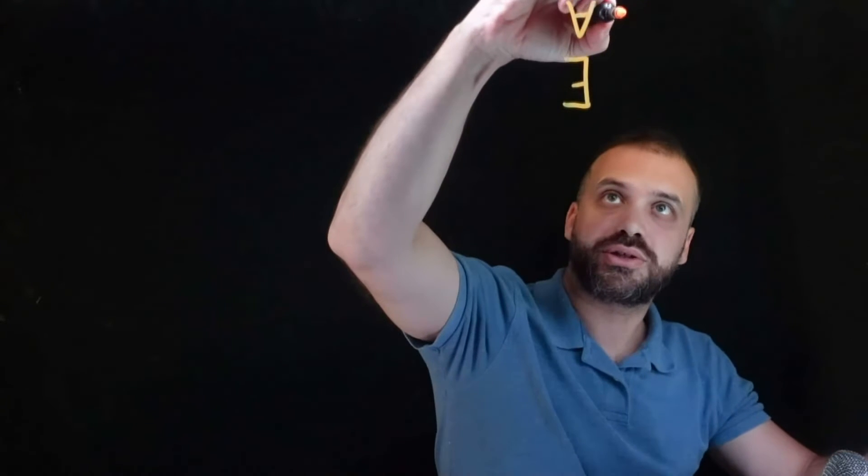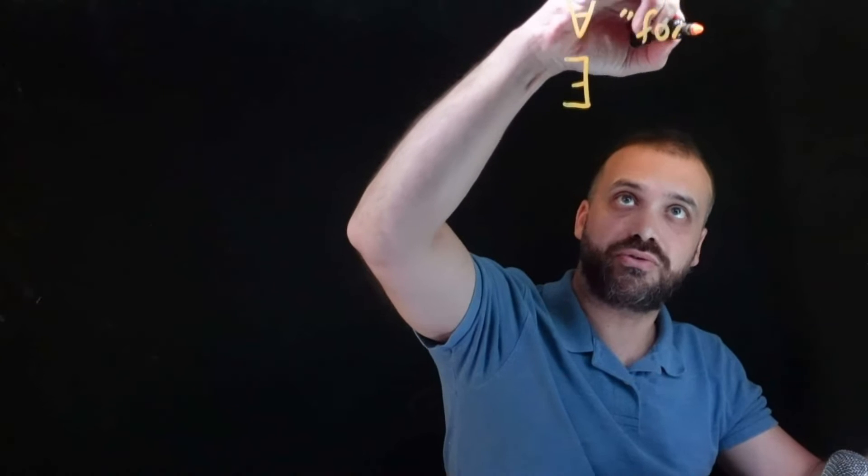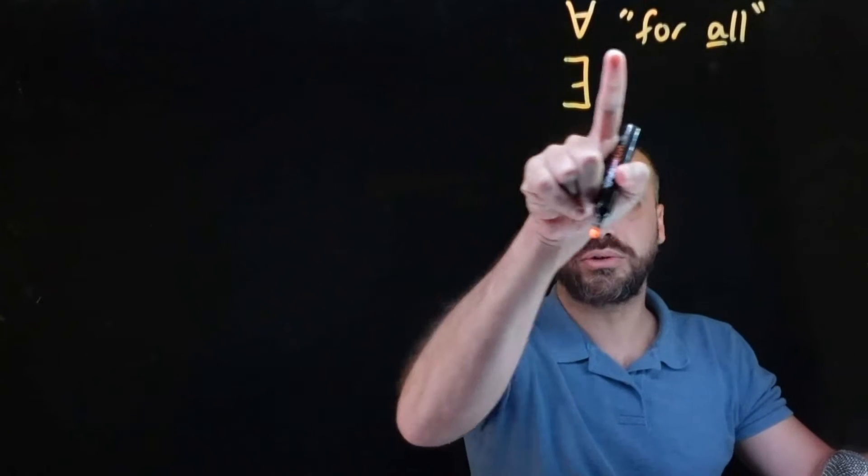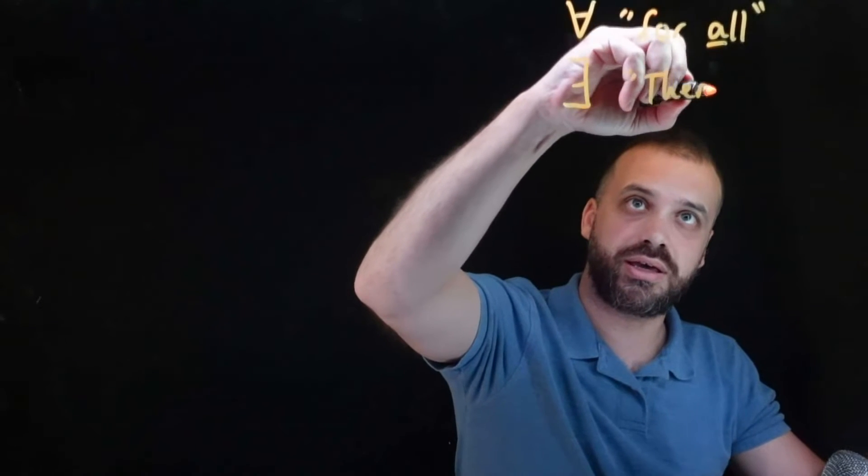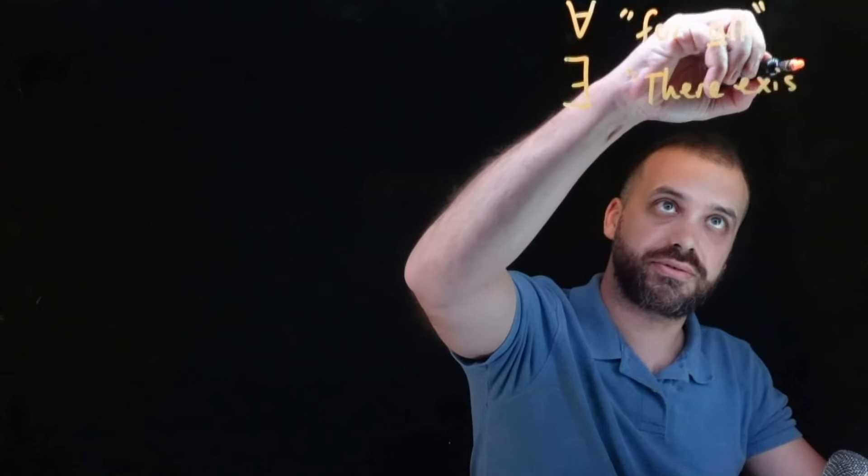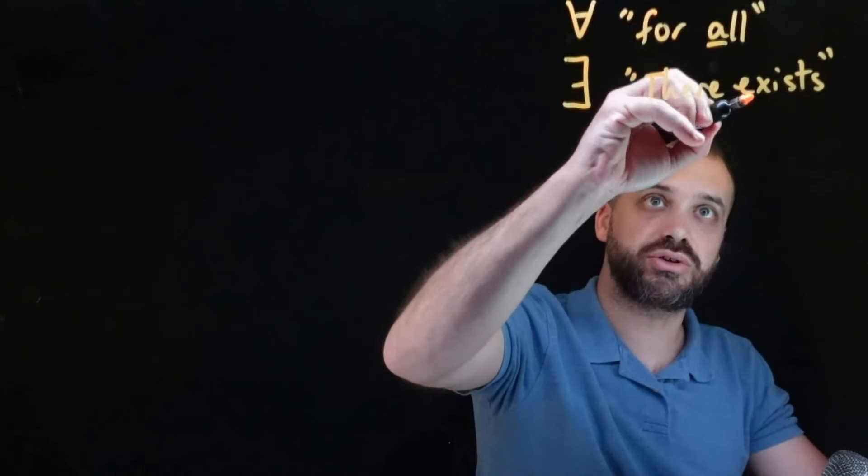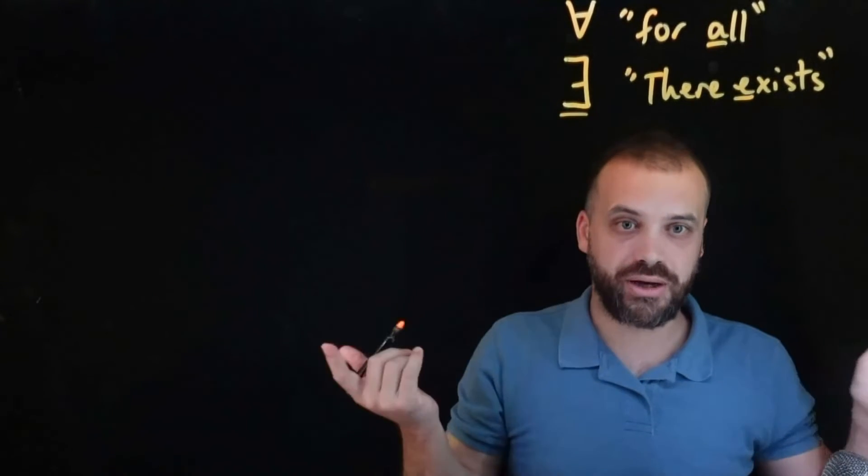So the two new symbols we're going to learn is this one here, an upside down A, and this one here, a backwards capital E. The first one means for all - easy to remember, all, upside down A. And this one means there exists - also easy to remember, E, backwards E.